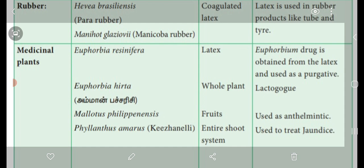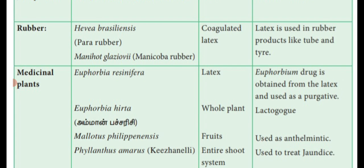Then, Rubber. Hevea brasiliensis — Para Rubber. Useful part is the milky latex. Hevea brasiliensis is known as Para Rubber. The coagulated latex is used in rubber products like tubes and tires. Another rubber is Manihot glaziovii — Manikoba rubber. Both of them are used to prepare rubber products, tubes and tires.